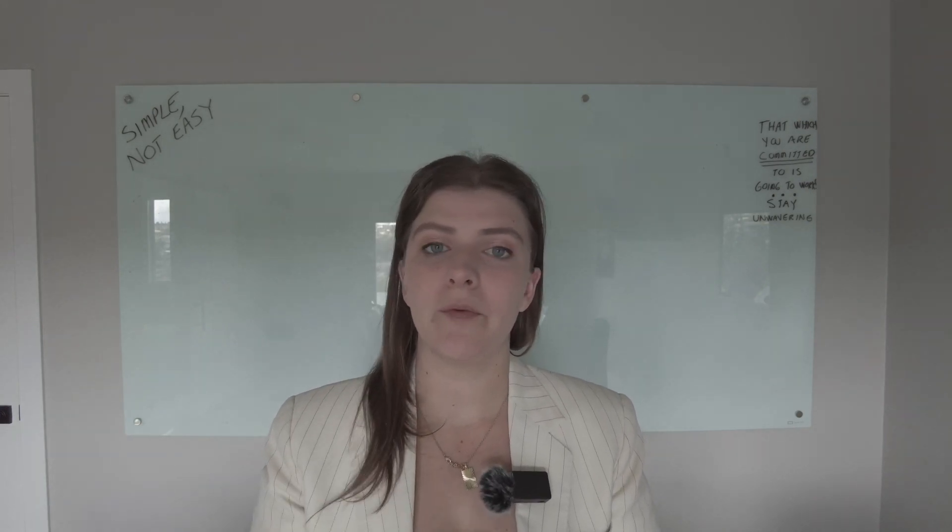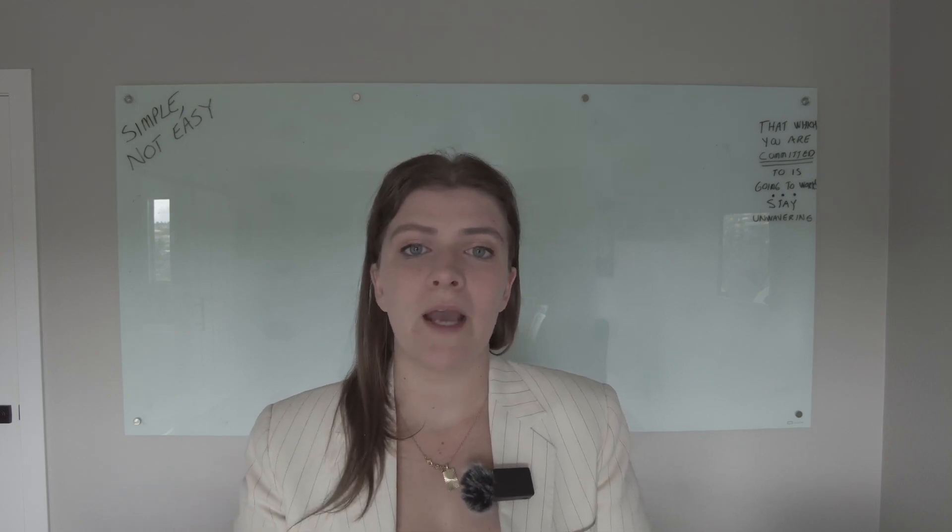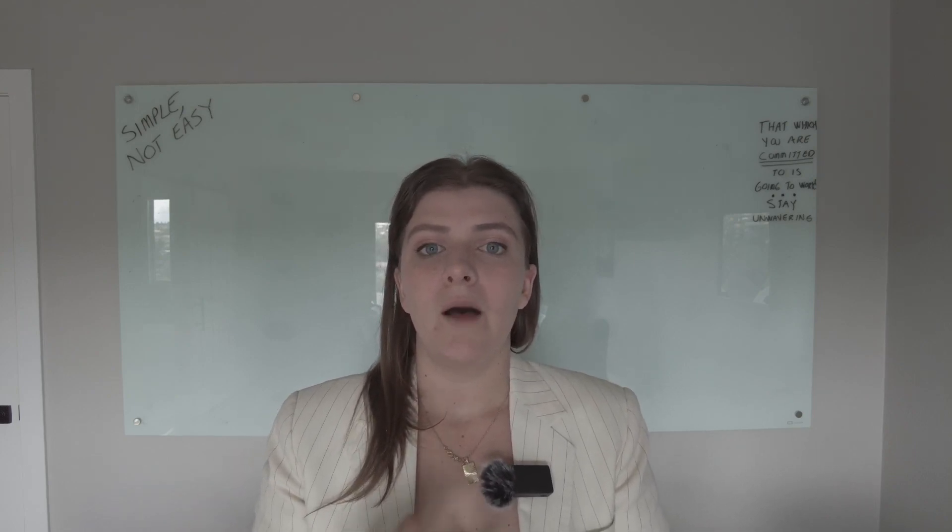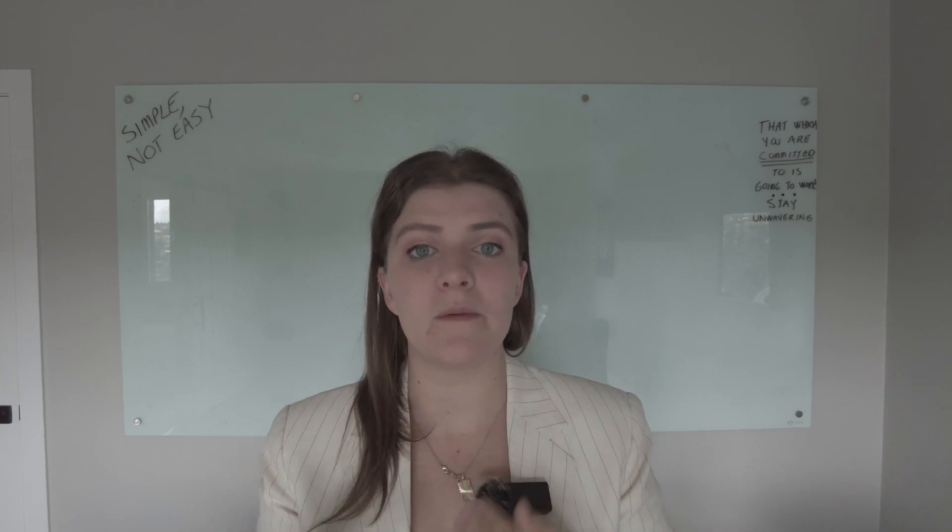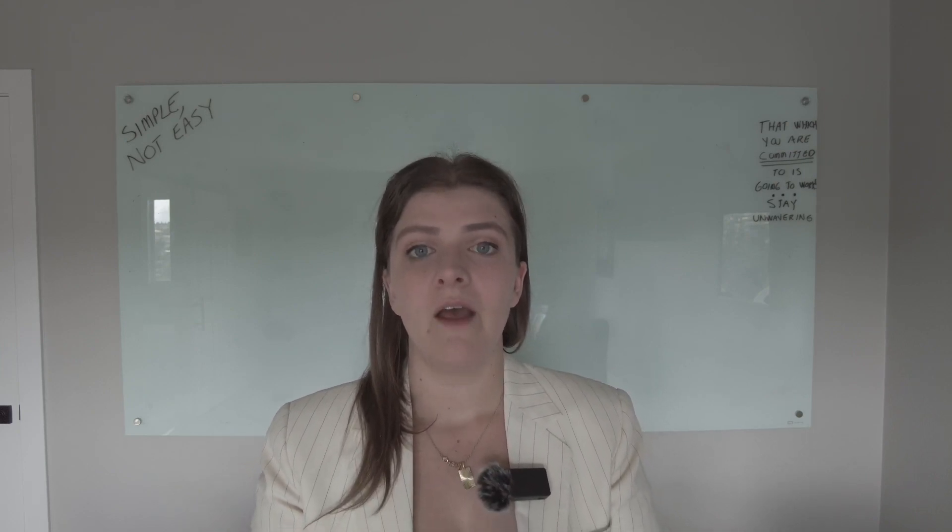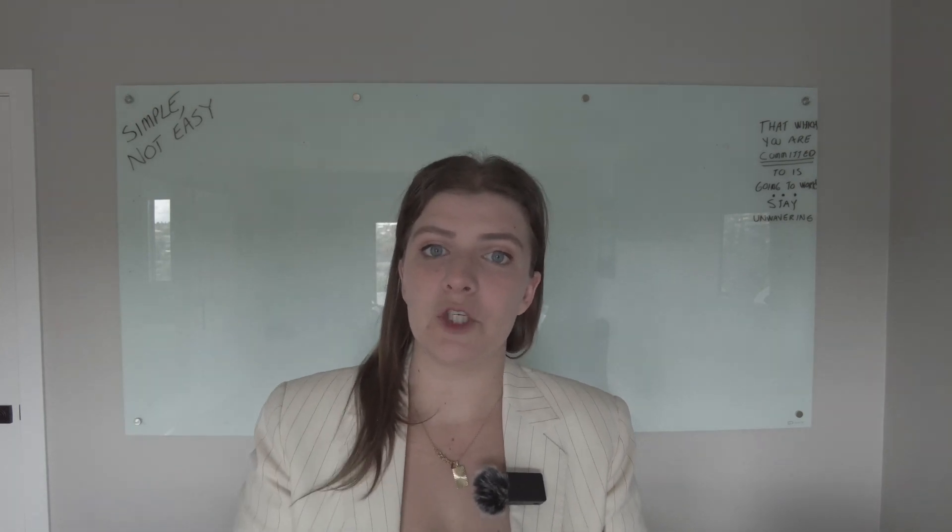Getting pre-approved with a lender basically gives you a number that you can go off of. Say the lender says you're pre-approved for $800,000. Then you know that you can go up to about $800,000. Typically you want to go a little bit under that - maybe $750,000 or $775,000. You can understand what your payment would be at those purchase prices.